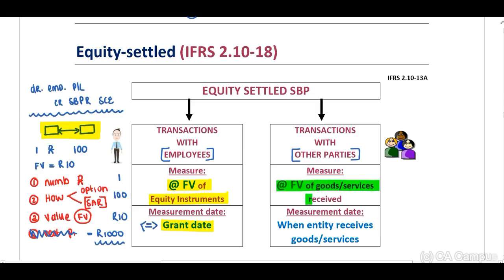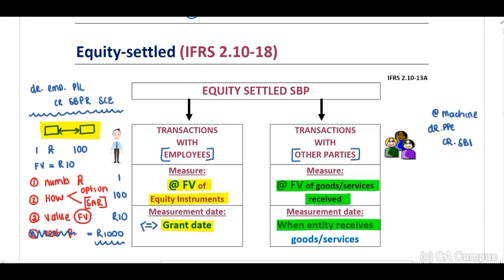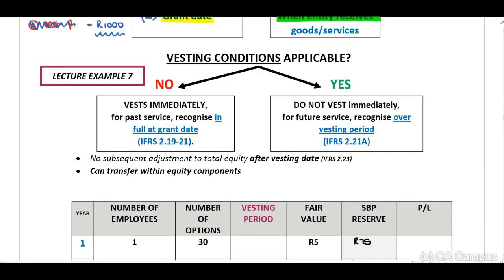When this is a transaction with other parties, we need to measure at the fair value of goods or services received, and we measure this when the entity receives the goods or services. For example, if another party provides our entity with a machine, we debit PPE for the machine and credit the share-based payment reserve in the statement of changes in equity, at the fair value of the machine when the entity receives it.